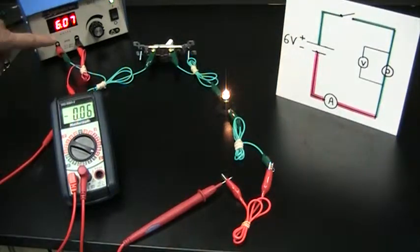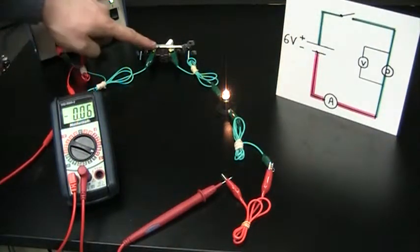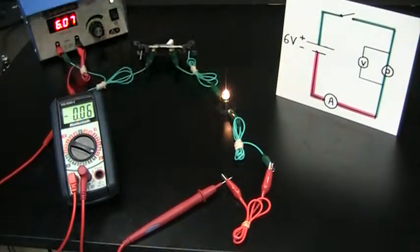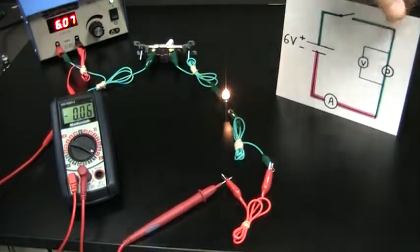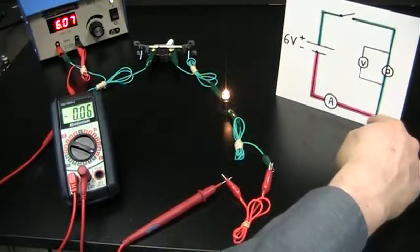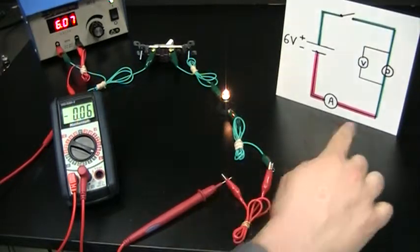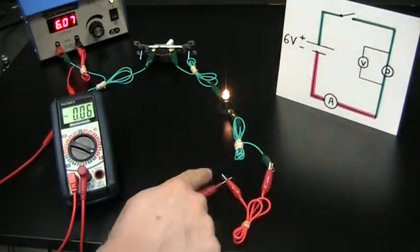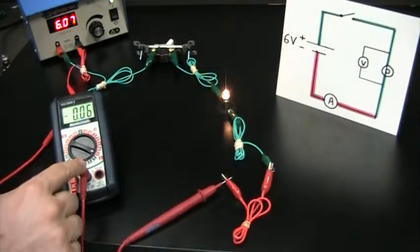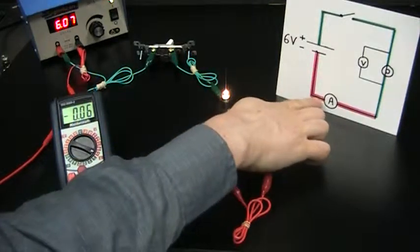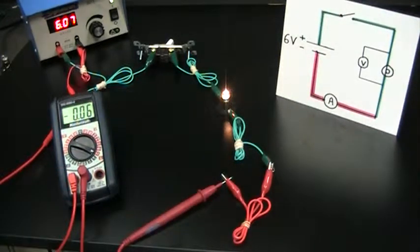Battery to switch, positive terminal of the battery to switch. Switch to light bulb. Light bulb down to a red wire here, into our ammeter, so it goes off camera and comes back in here. And then finally from our ammeter to our negative terminal, around it goes and into the negative terminal of the battery.